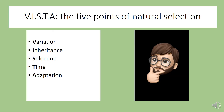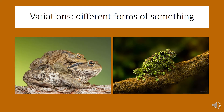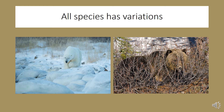There are five points of natural selection. The way to remember them is with the word VISTA: Variation, Inheritance, Selection, Time, and Adaptation. The first point is that populations have variations. Variations are different forms of something — you can think of them as traits that help a species survive in their particular environment, like different types of toads or bears.